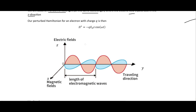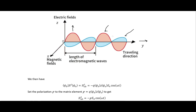We have our electromagnetic field where the red is our electric field and the blue is our magnetic field. The electric field is polarized in the up-and-down z direction and is traveling in the y direction. Our perturbed Hamiltonian for an electron with charge q is then the negative of the charge times the amplitude of the electric field in the z direction times this cosine function.